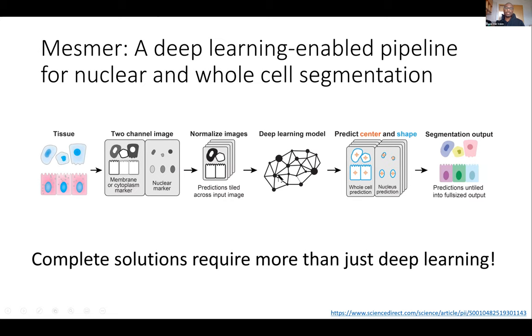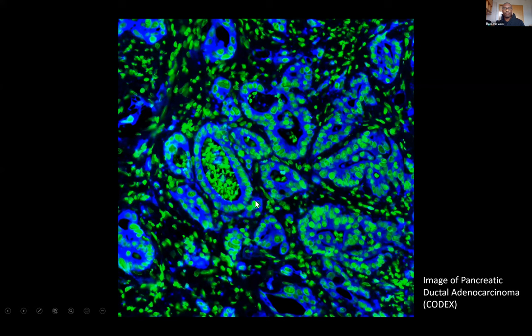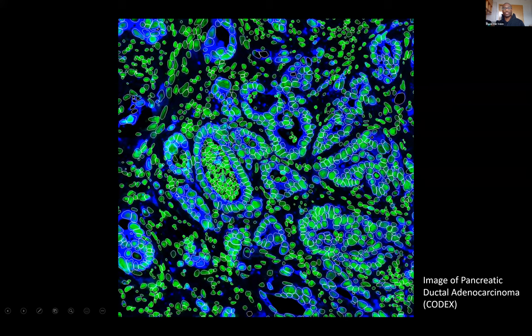I'd like to highlight that Mesmer places this deep learning in a larger pipeline that performs both image normalization and then tiling and untiling so that you can perform predictions on large images. I highlight this because I think complete solutions do require more than just the deep learning — it's this entire pipeline that provides value to users, not just the deep learning model itself. I'd like to walk you through a visual tour of some of the results, because I think they're quite nice. Here we have an image of pancreatic ductal adenocarcinoma collected with the CODEX platform. These white outlines are the predictions of where whole cells exist in this image. You can just see visually that Mesmer works fairly well, and is even able to segment cells even when the cell nucleus isn't present, using the visual cues from the membrane stain.